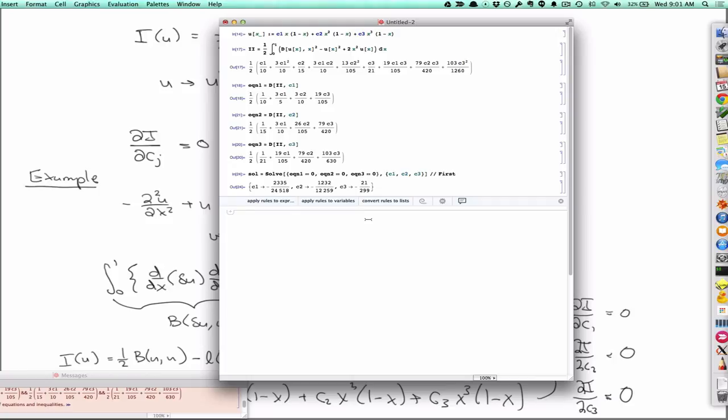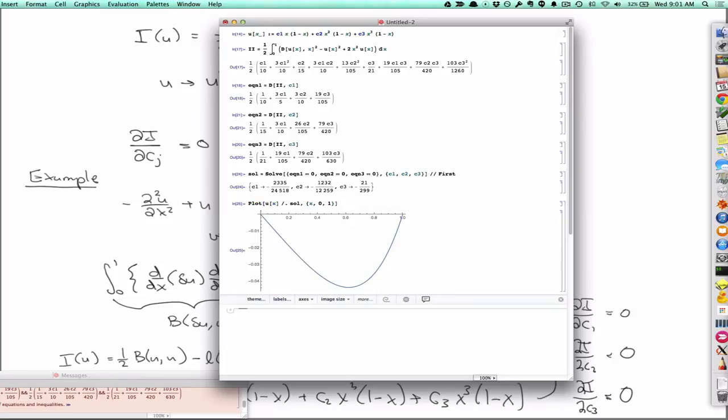And so with that, I should be able to plot the solution. So if I plot u(x) evaluated with the solution from x equals zero to one. So there's the solution or the approximate solution based on those interpolating functions.